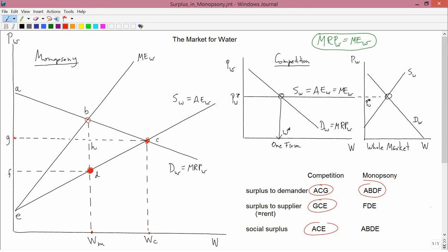WM is less than WC because the monopsonist knows that the more he buys, the more he has to pay per unit, not only for the marginal unit but for all the units. So he cuts back on the buying.